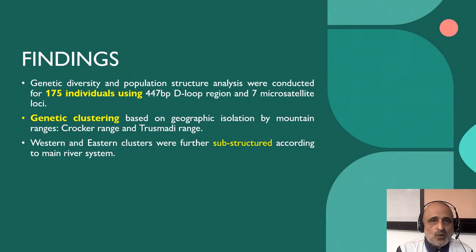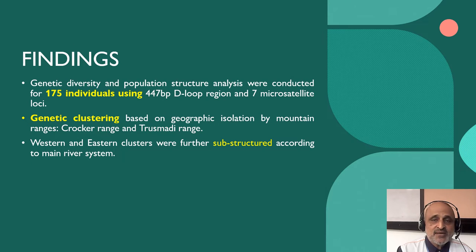A total of 175 individuals were sampled across the entire riverine system. What was observed at first instance was genetic clustering based on geographic isolation, as well as substructuring of populations within each of these clusters.